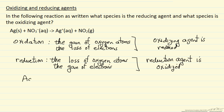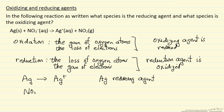In our reaction, silver goes from an oxidation state of 0 to an oxidation state of +1, so silver has lost electrons, meaning silver is oxidized. That makes silver the reducing agent. And then NO₃⁻ is the oxidizing agent because it is reduced. So NO₃⁻ is the oxidizing agent.